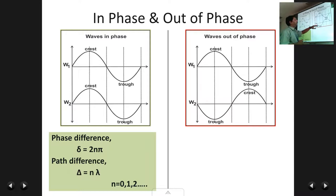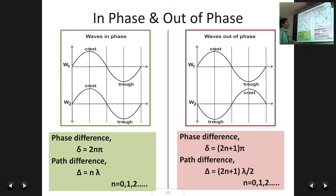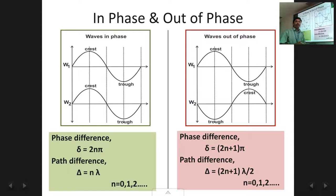For waves out of phase, this happens when the crest of one wave comes over the trough of the other wave, and the trough of one wave overlaps with the crest of the other wave. The conditions required are: the phase difference between the waves is an odd multiple of pi, and the path difference is an odd multiple of half wavelength. These are the important basic parts of this chapter.